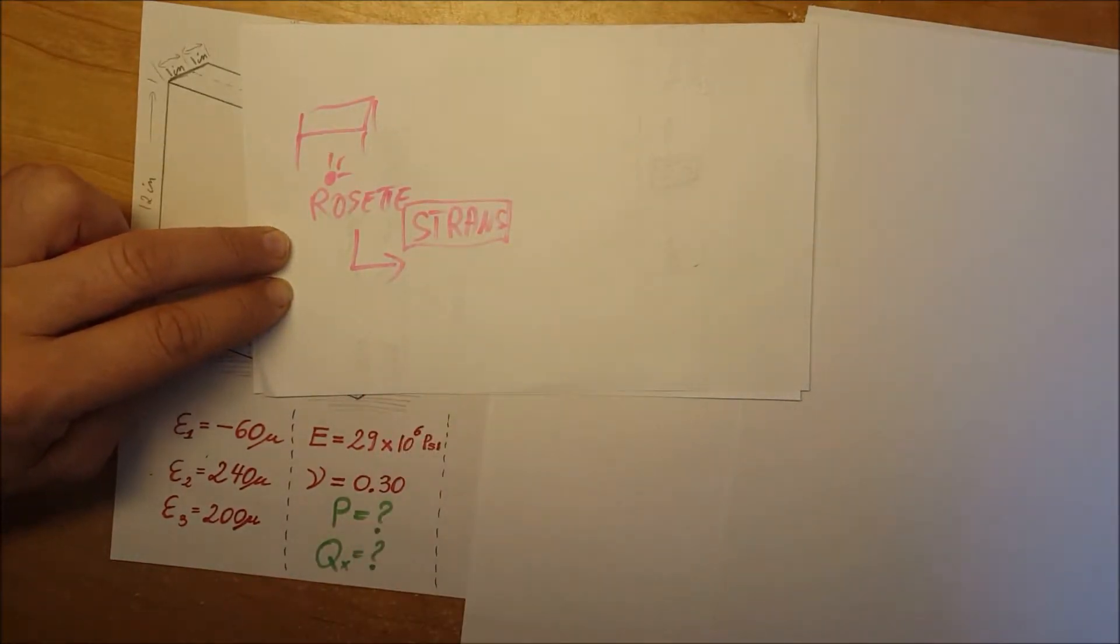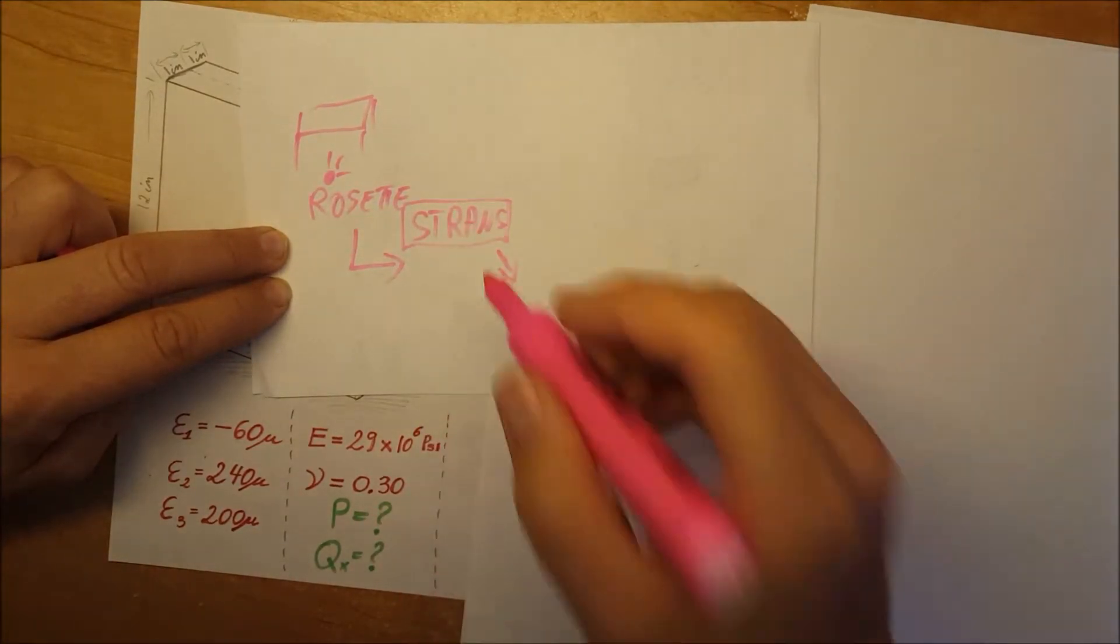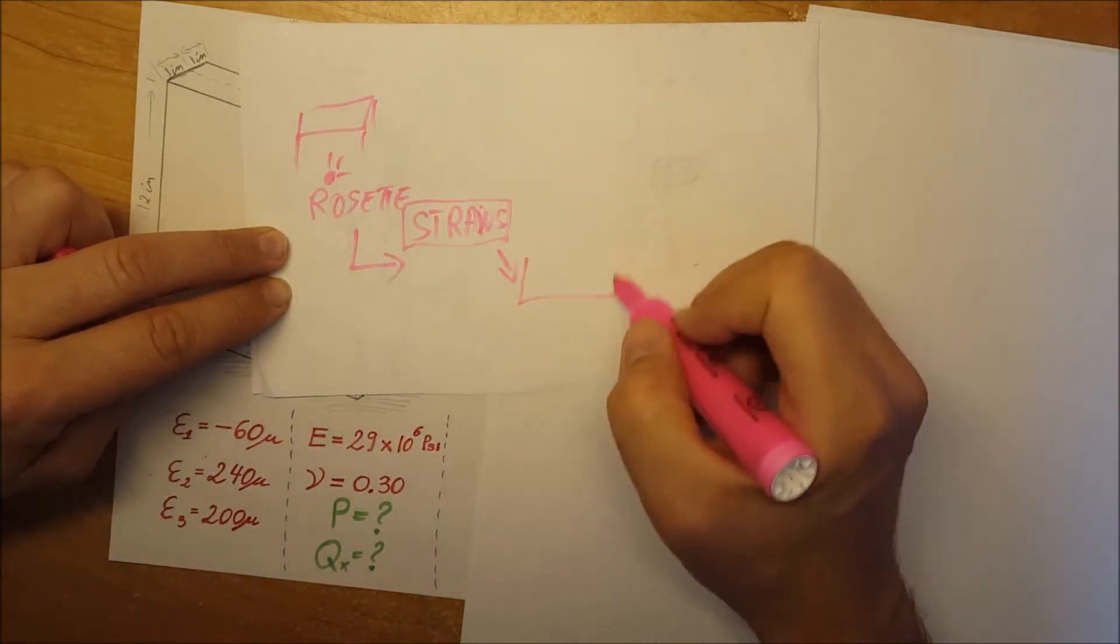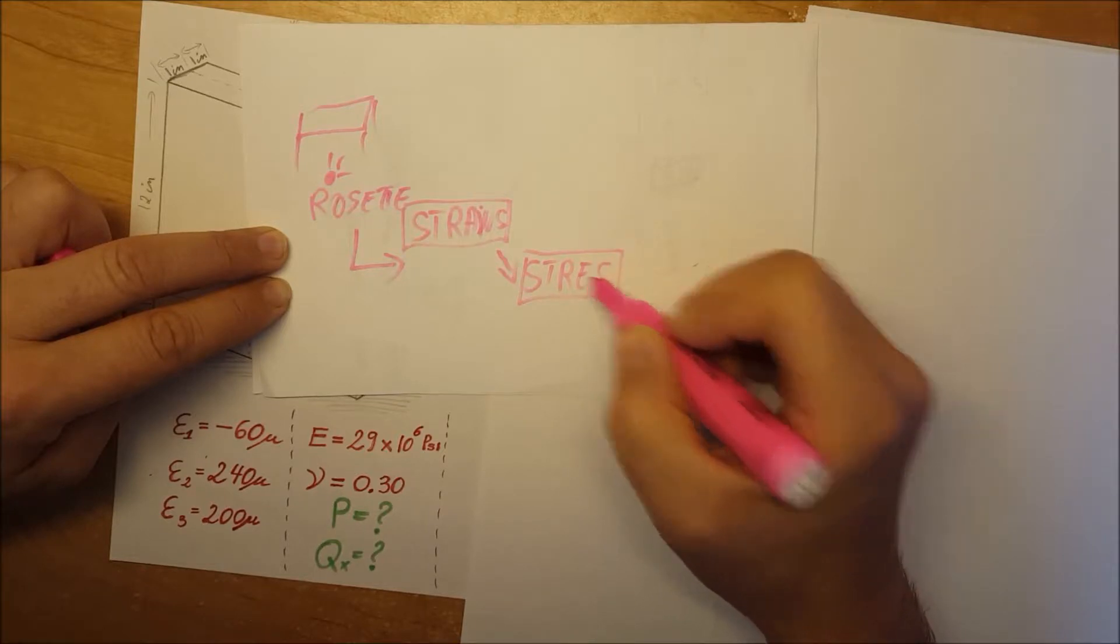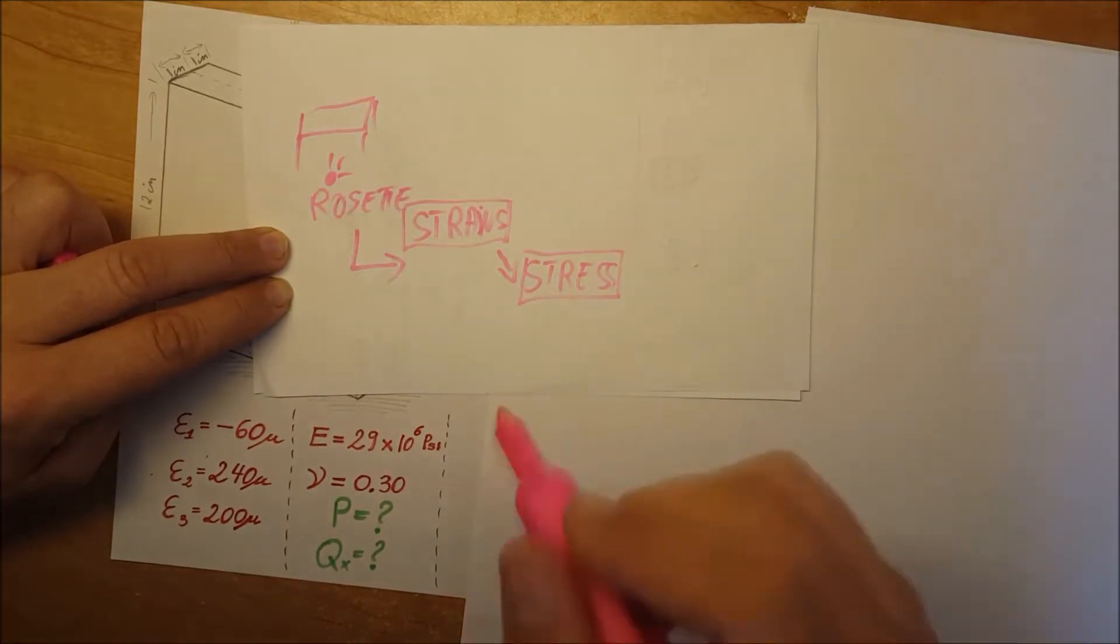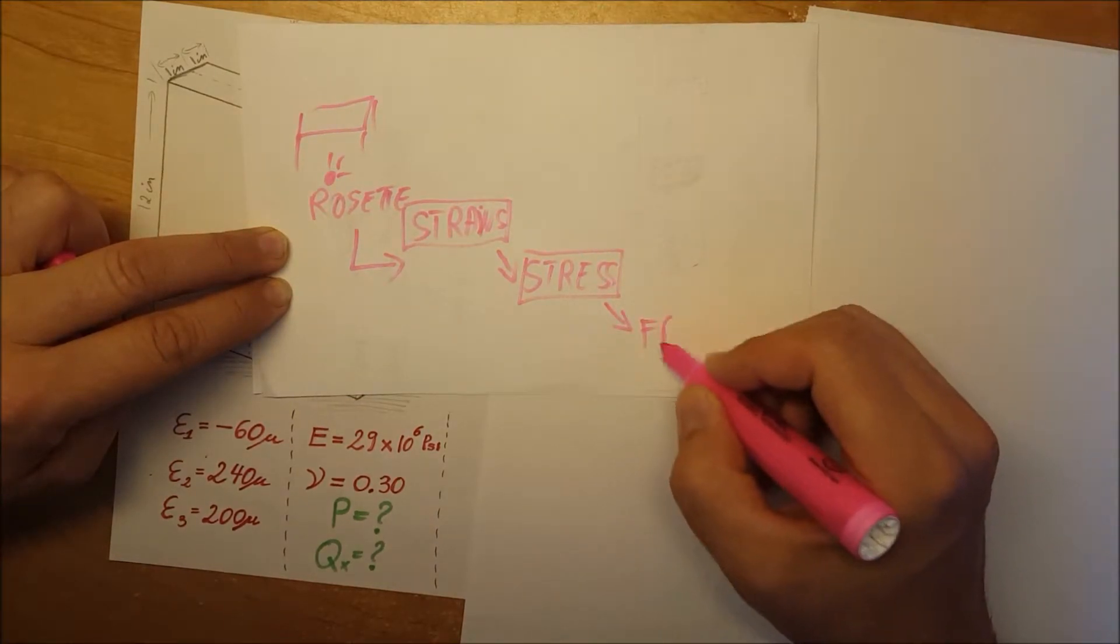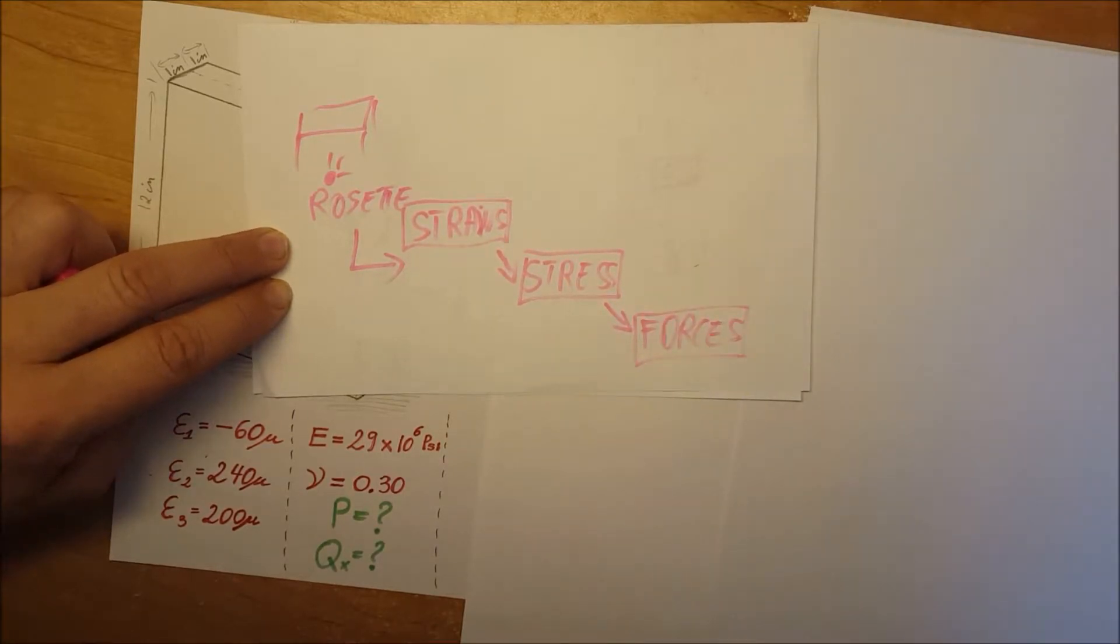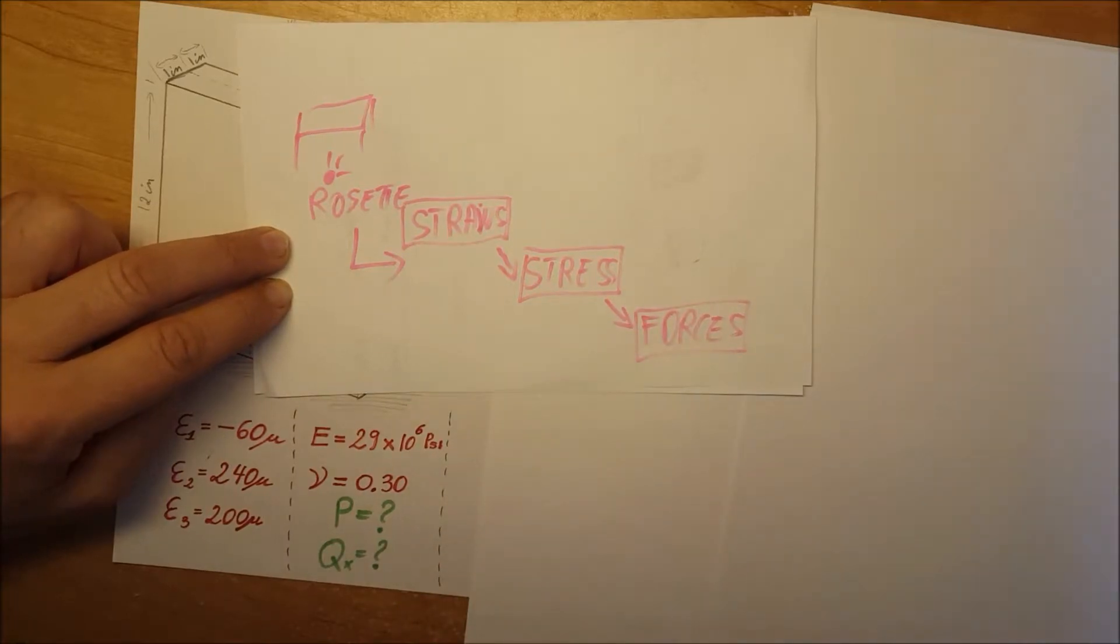From formulas that we learned, we are able to go from strains to stress in the system. From here, we are able to calculate our forces. So just an overview of the game plan: strain to stress to forces. This is what we're going to be doing.